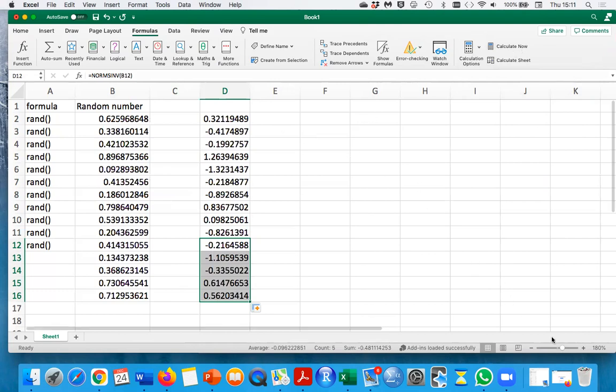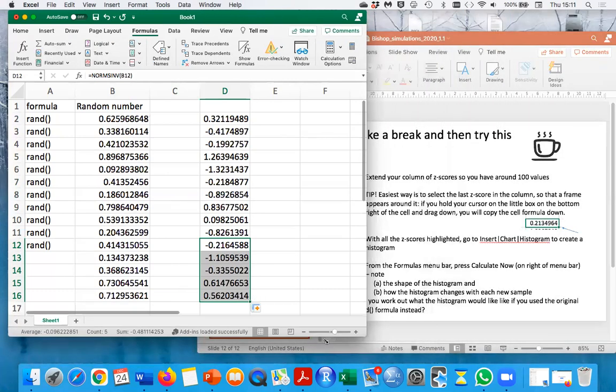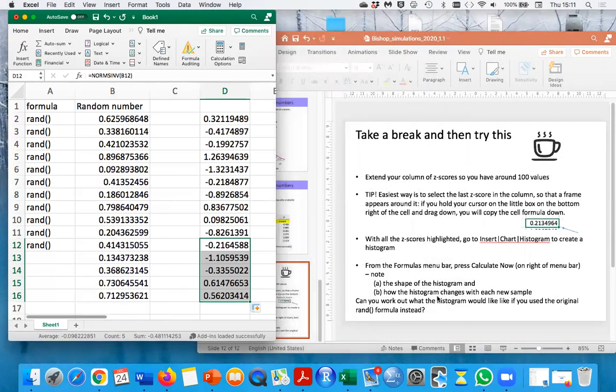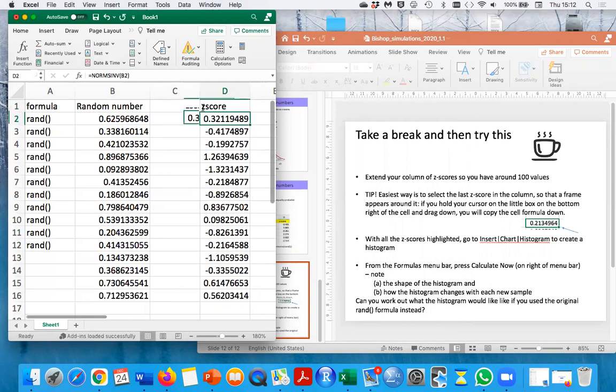So what I want you to do in your exercise is to play about with this, changing it and looking at how the histogram changes every time you do calculate now. And then I also want you to think it's very useful when you're doing simulation to make changes, but before you make the change to think whether you can predict what effect that would have. And so if you were to actually do a histogram using these numbers, what would that look like? So play about with both of those. And this should already be giving you a more intuitive feel for what a Z score is and what a P value is.